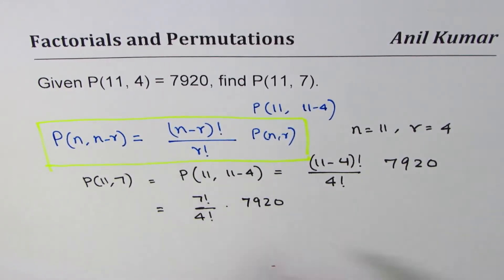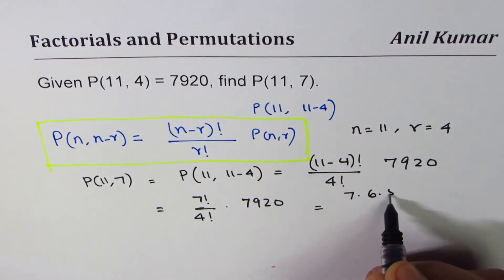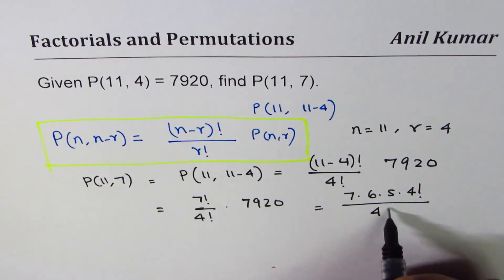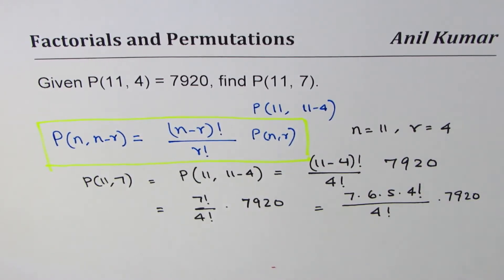7 factorial really means 7 times 6 times 5 times 4 factorial. Since we have 4 factorial in the denominator, it's a good practice to stop there. Times 7920. So 4 factorial cancels from numerator and denominator.